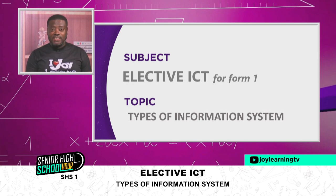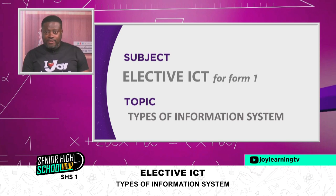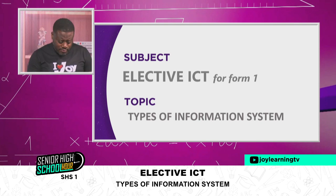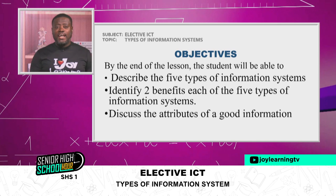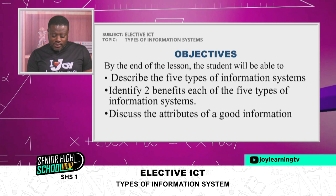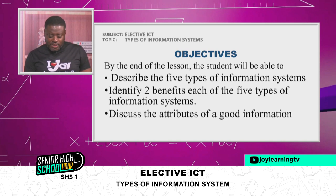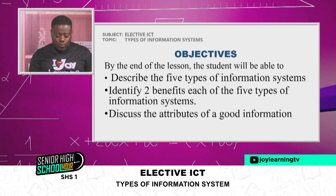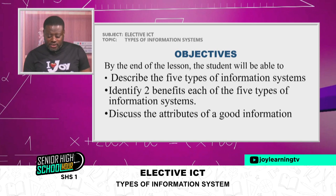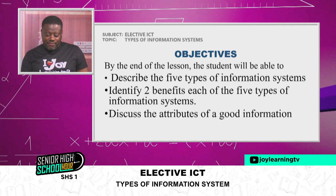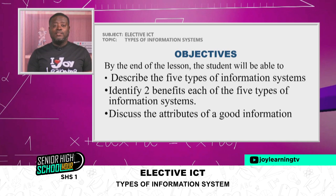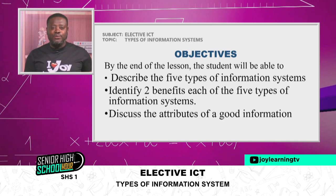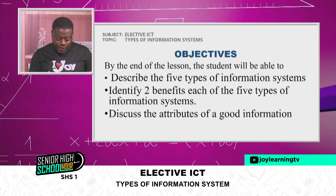Now let's get into the lesson. Today, let's look at the objectives of the lesson. By the end of the lesson, you, the student, will be able to: one, describe the five types of information systems; two, identify two benefits each of the five types of information systems; and lastly, discuss the attributes of good information.